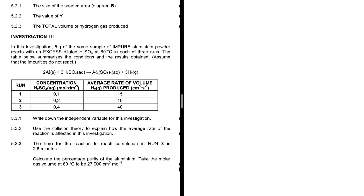We're interested in Run 3. In Run 3, we have the concentration of the sulfuric acid and the average rate of volume of hydrogen gas produced in centimeter cubes per second. We want to calculate the percentage purity of the aluminium.